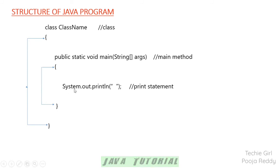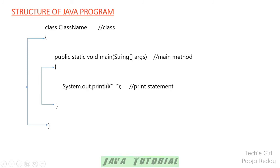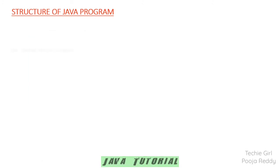Whatever you include in double quotes will be printed as-is on your output screen. System starts with a capital letter, so it is treated as a class. Out is an object, and println is a method. The 'ln' part is optional — you can use either println or print only. That covers the structure of a Java program.